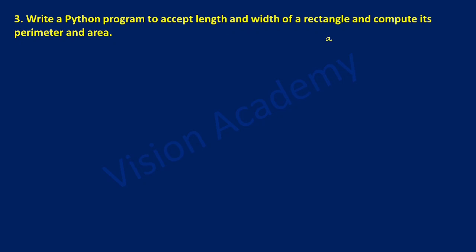The area can be calculated using the formula length times width. The perimeter of the rectangle can be determined with the formula 2 times the quantity length plus width. We are going to implement both of these formulas in this program.